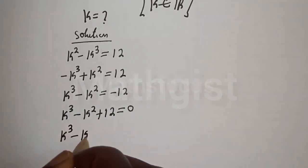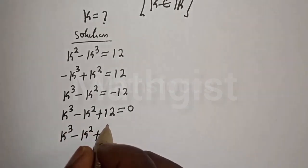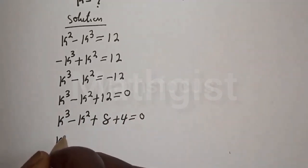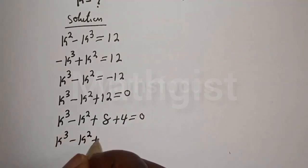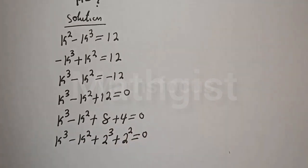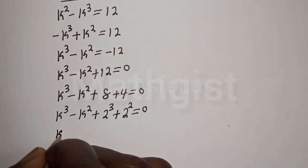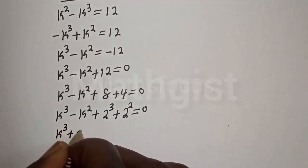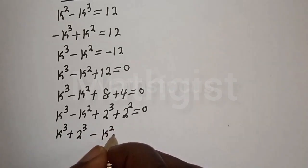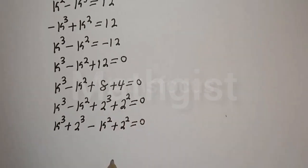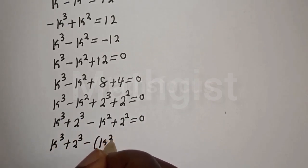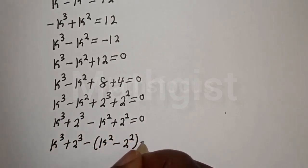k raised to power 3 minus k squared plus 12 can be written as 8 plus 4 equal to 0. Then k raised to power 3 minus k squared plus 8 can be written as 2 raised to power 3, plus 4 which is 2 squared, is equal to 0. Now let's compare: k raised to power 3 plus 2 raised to power 3 minus k squared minus 2 squared is equal to 0.